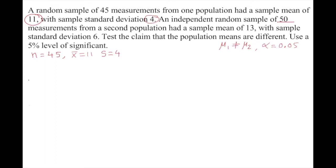From the second sample: n₂ = 50, X̄₂ = 13, s₂ = 6. Notice that we use subscripts 1 and 2 to distinguish the two independent samples, since one is not depending on another. These are drawn from two separate populations.